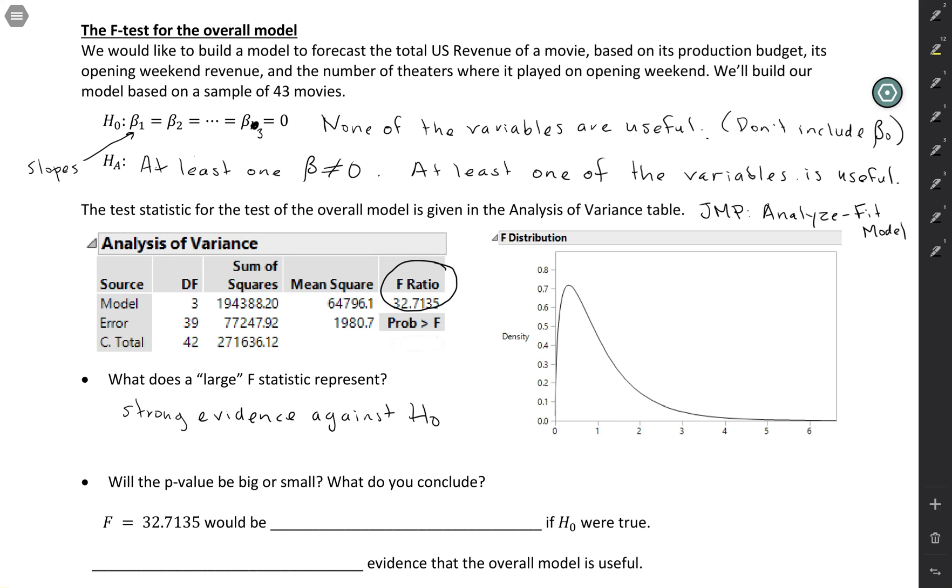But is this large enough, 32.7135? Is that large enough to convince us that at least one of the variables is useful? To answer that you need some kind of distribution to compare it to.